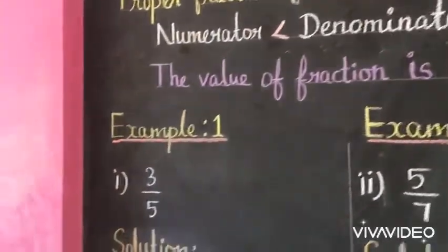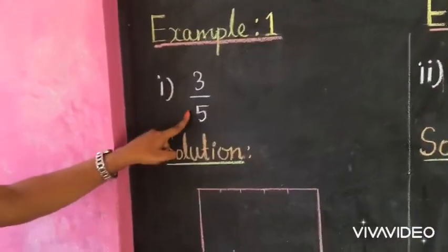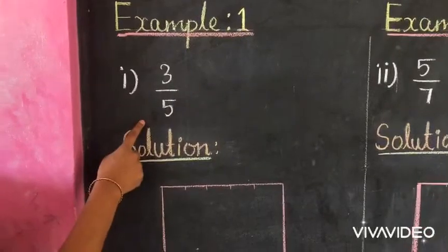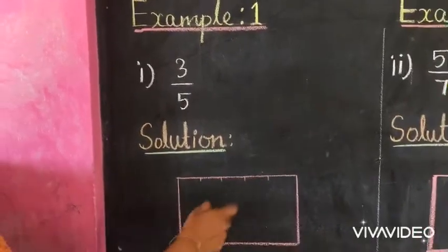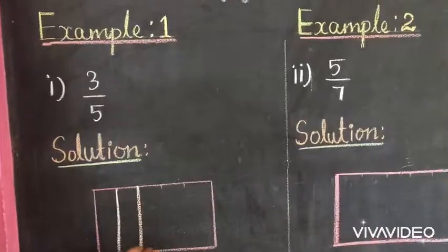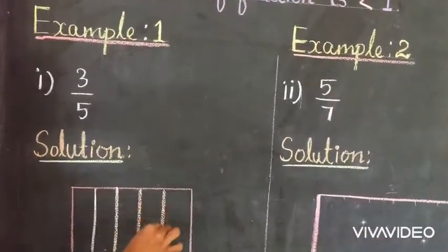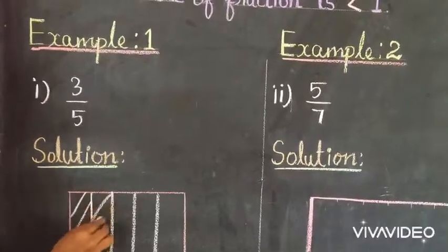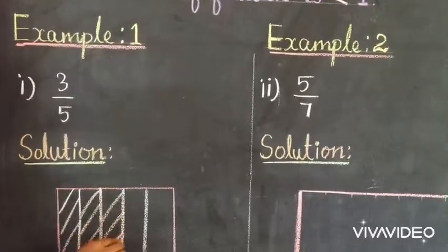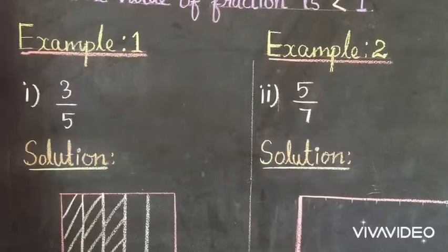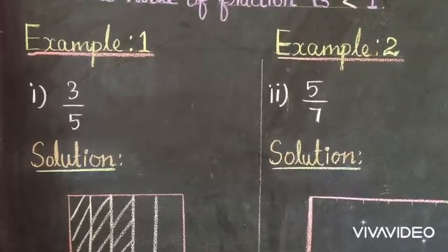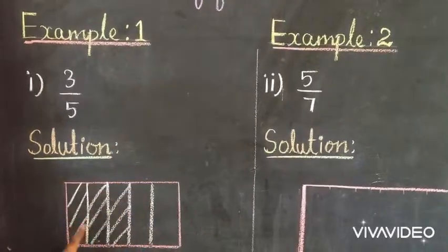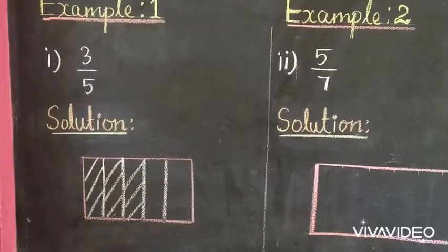Let us take an example: 3 by 5. What does the fraction 3 by 5 represent? One thing is divided into 5 equal parts and we share only 3 parts. Here, we can share 3 out of 5 parts in one thing. So, it is a proper fraction.